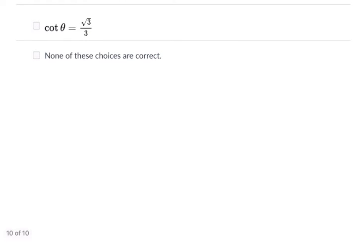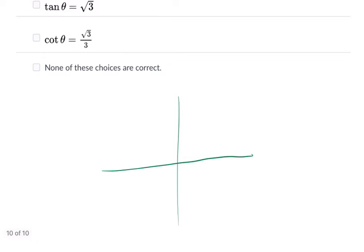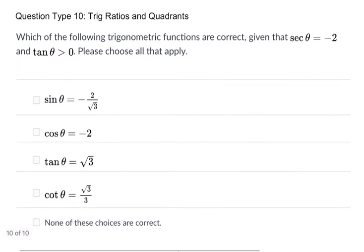Alright, so let's draw a y-axis and an x-axis. And our secant, what do we know here? Tangent is positive, but you can see that secant is negative.